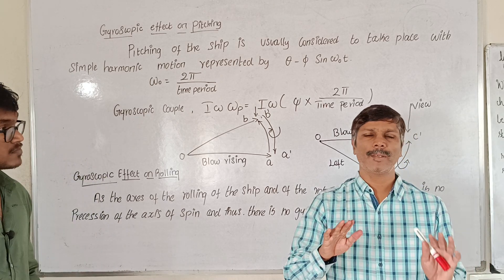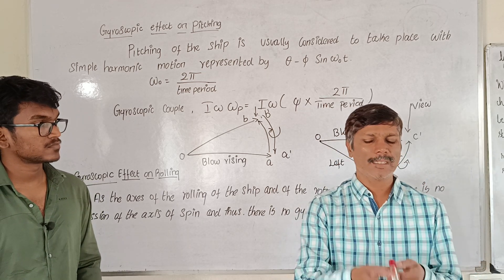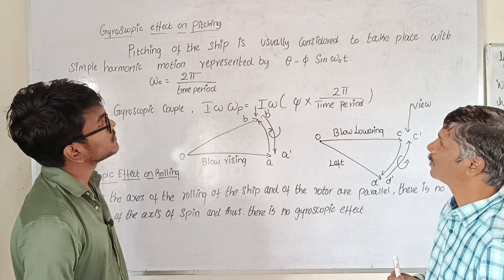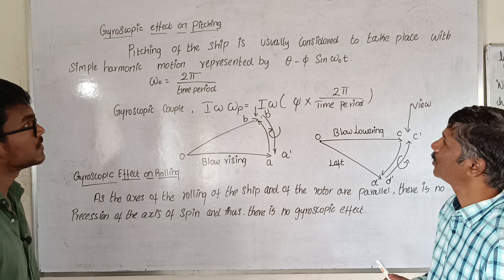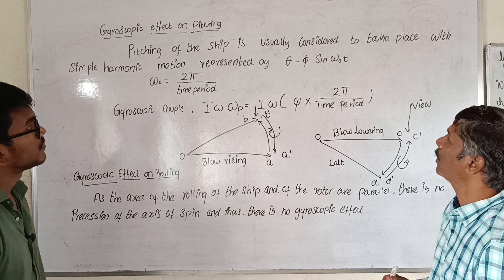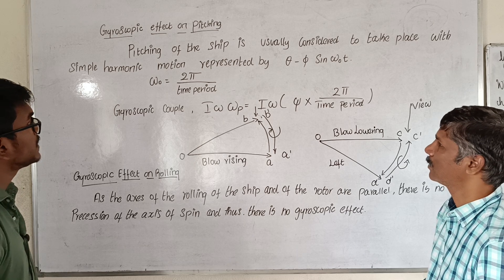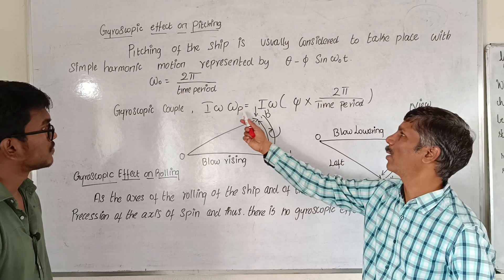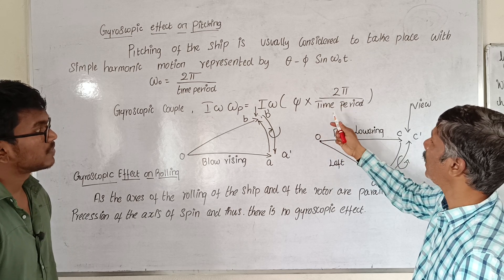The pitching is usually considered to take place with simple harmonic motion represented by theta equals pi sin omega t. The angular velocity is 2 pi divided by time period.